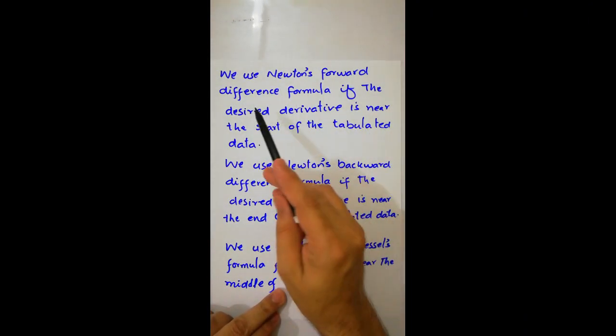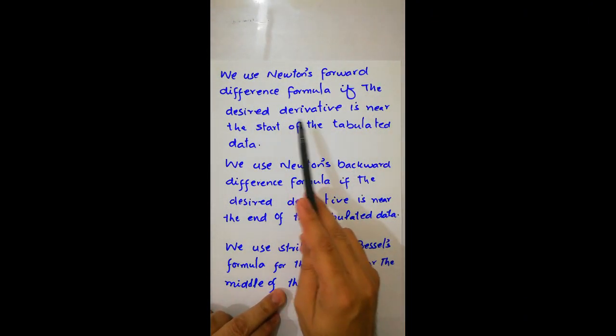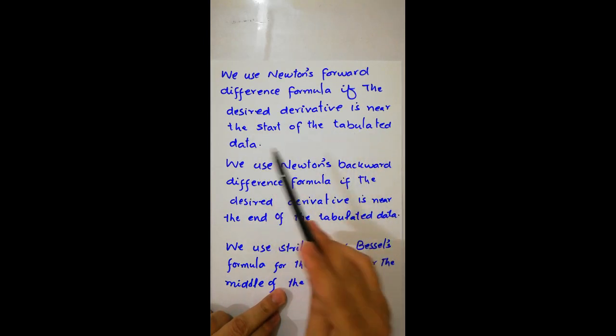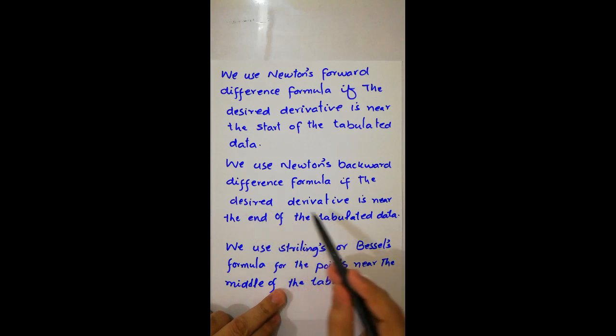We use Newton's forward difference formula if the desired derivative is near the start of the table. And we use Newton's backward difference formula if the desired derivative is near the end of the tabulated data.